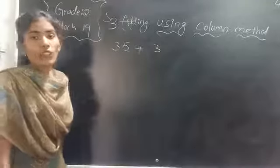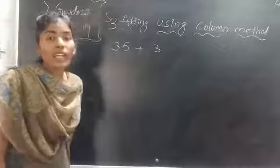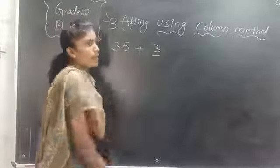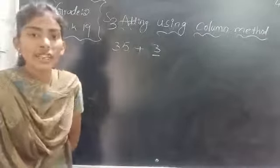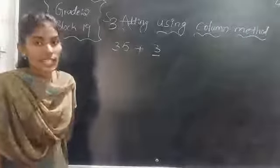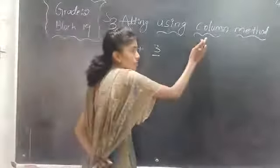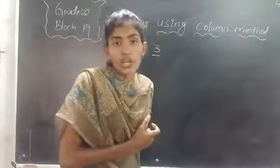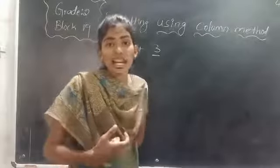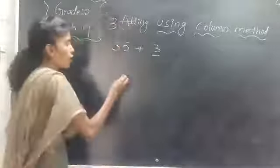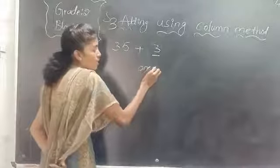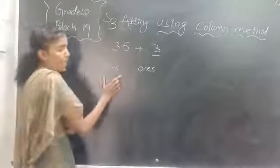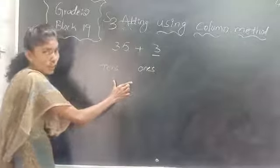Which place value blocks will there be in 2-digit numbers children? There are 1s and 10s place values in 2-digit numbers. And this is a 1-digit number — which place value will be in a 1-digit number? Only the 1s place value. To add numbers by using column method, first we have to arrange the numbers according to their place values. We have to line up the numbers as 10s and 1s, and we add right-side place values first.